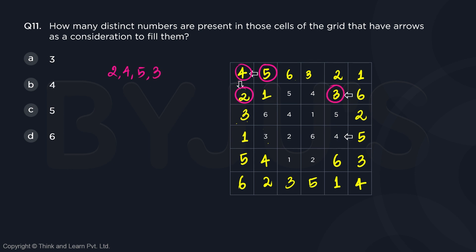This cell also has a 3, this cell has a 6. So, so far 5 numbers.